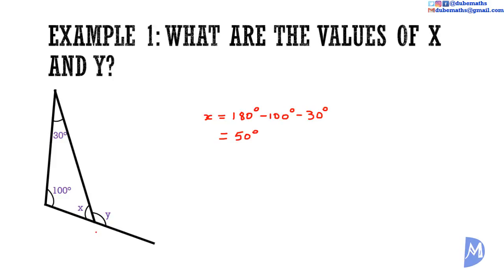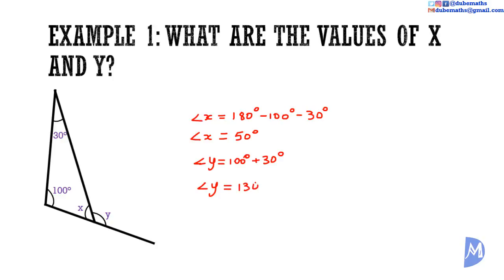Y is an exterior angle to this triangle. The exterior angle is equal to the two opposite interior angles in a triangle. Therefore, angle Y is equal to 100 degrees plus 30 degrees. Angle Y is equal to 130 degrees.